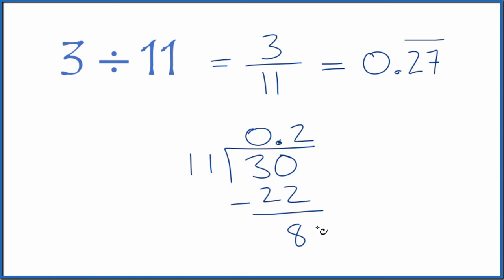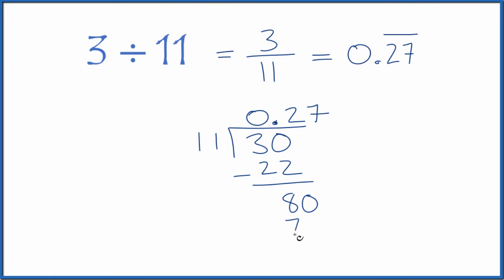11 doesn't go into 8. We call it 80 and move over 1. 7 times 11, that's 77. Subtract, we get 3.